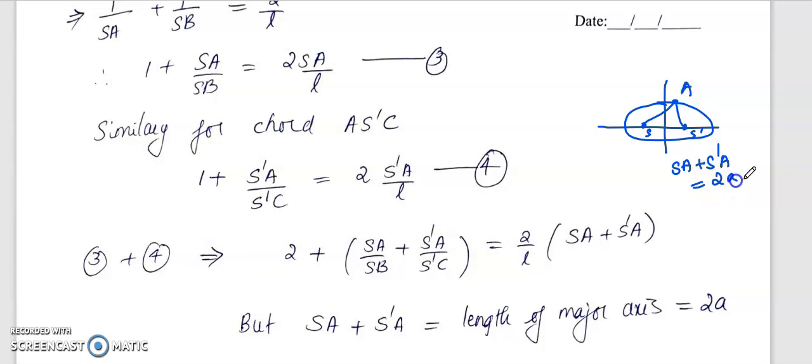So if you have a standard ellipse x² by a² plus y² by b² equal to 1.